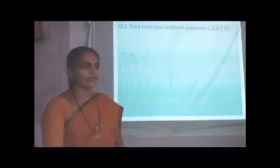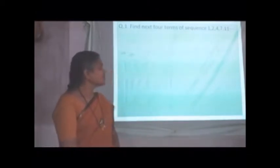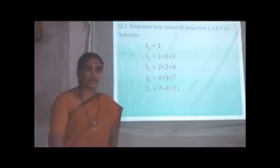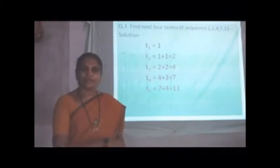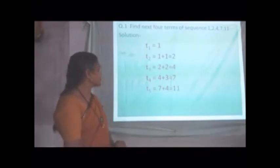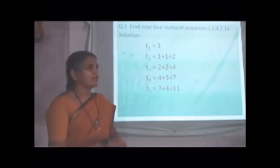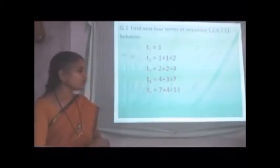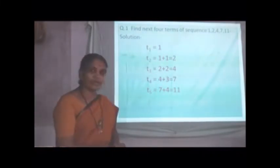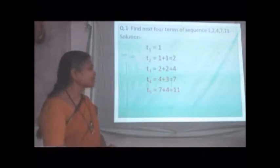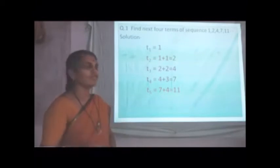For this, we can solve some examples. First example, find next four terms of sequence 1, 2, 4, 7, 11. The sequence is given, and we have to find next four terms. For this, we have to find first rule of sequence, which is definite rule. So, we write given terms. T1 is equal to 1. T2 is equal to 1 plus 1, we get 2. For T3, 2 plus 2, that is 4. T4, 4 plus 3 is equal to 7. T5 is equal to 7 plus 4 is equal to 11. So, see, we add some terms such as 1, 2, 3, 4. Serially, increasing order. We add these numbers and get next term. So, there is definite rule. So, now we can find next term.